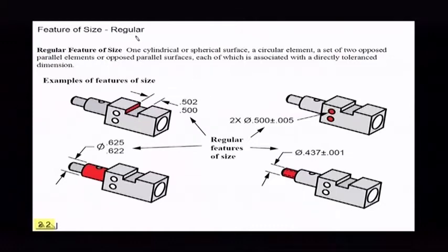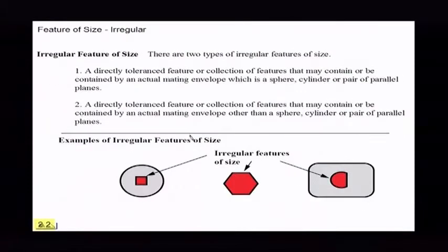We call them regular features of size. Now we say regular feature of size because we introduce something new in the new standard. They're called irregular features of size. And irregular features of size would be something like a hex or something like a square, a hex or maybe a D-shaped hole, or we could have a taper or we could have some type of a contoured shape to be used as a datum feature.